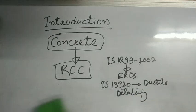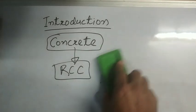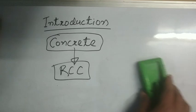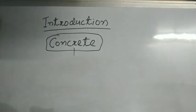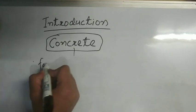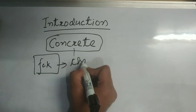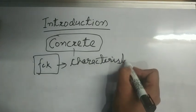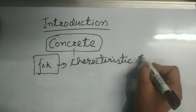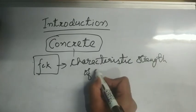So these were some of the important codes which you need to remember. Now we will move on to a topic called as characteristic strength of concrete, which is denoted as FCK.